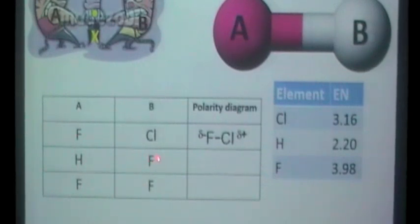HF. So A is H, B is F, so 2.2 versus 3.98. So fluorine is going to draw the electron pair across that way towards itself and so the polarity diagram would look like that. Now so we've got delta plus on the H and delta minus on the F.